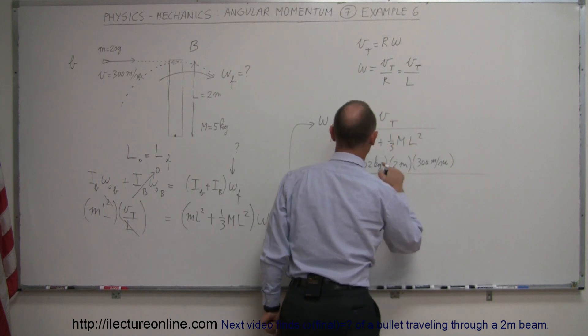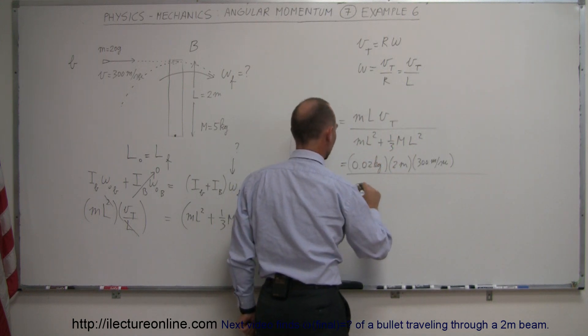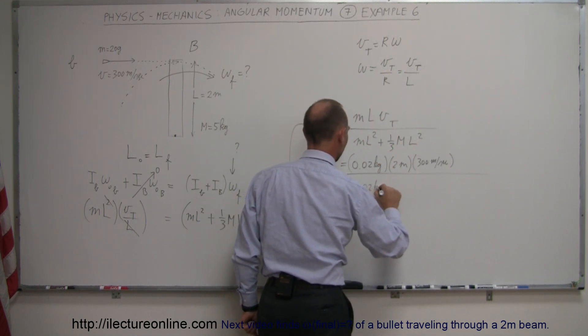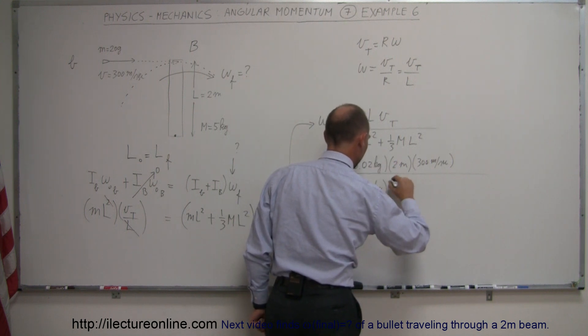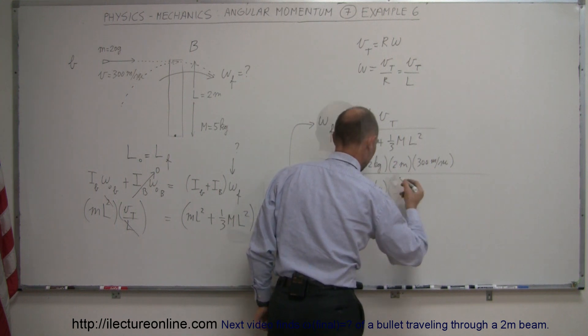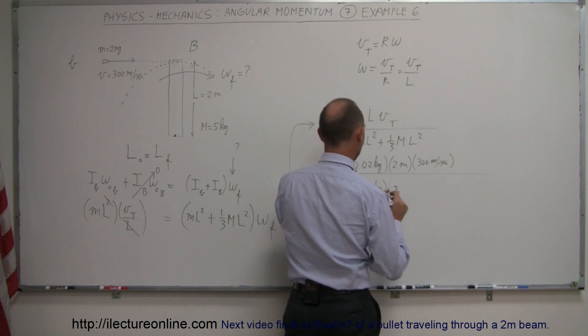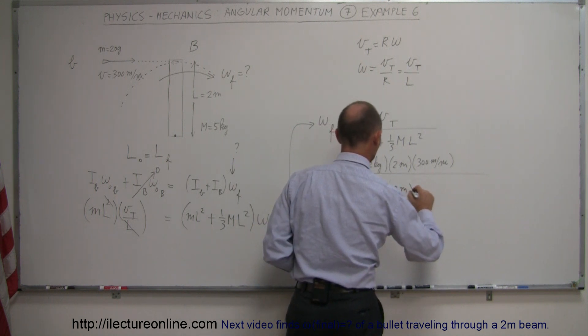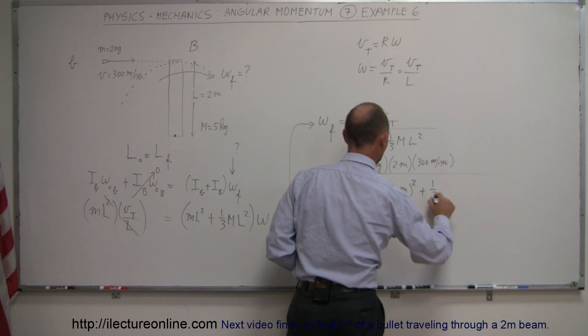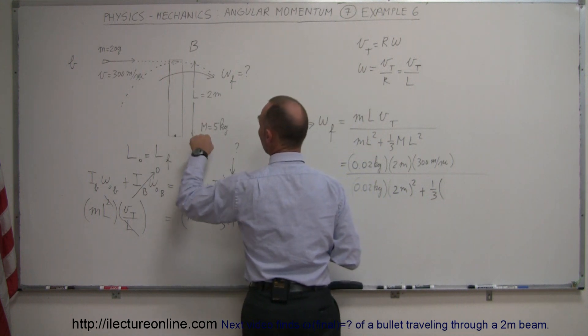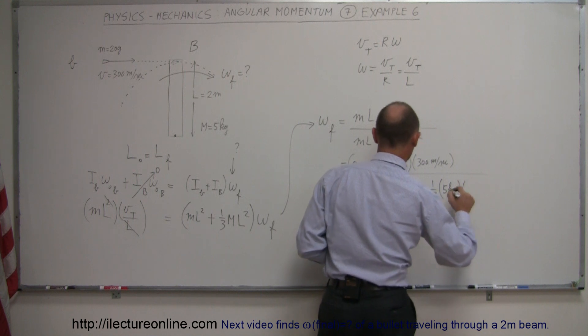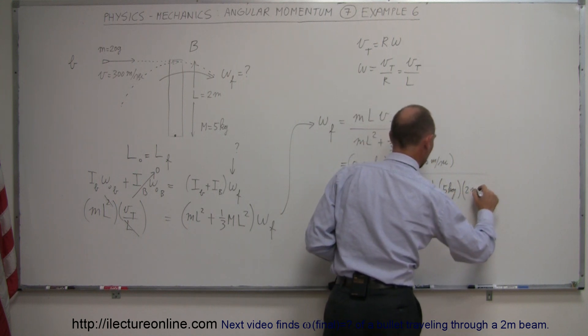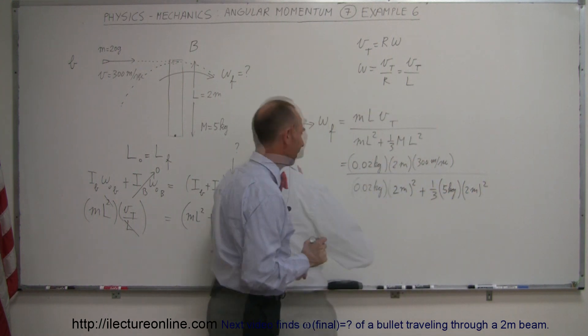We divide that by the moment of inertia of the bullet which is 0.02 kilograms times the length of the beam which is 2 meters squared, plus one-third the mass of the beam which is 5 kilograms times the length of the beam squared, 2 meters squared. And I think now we're ready.